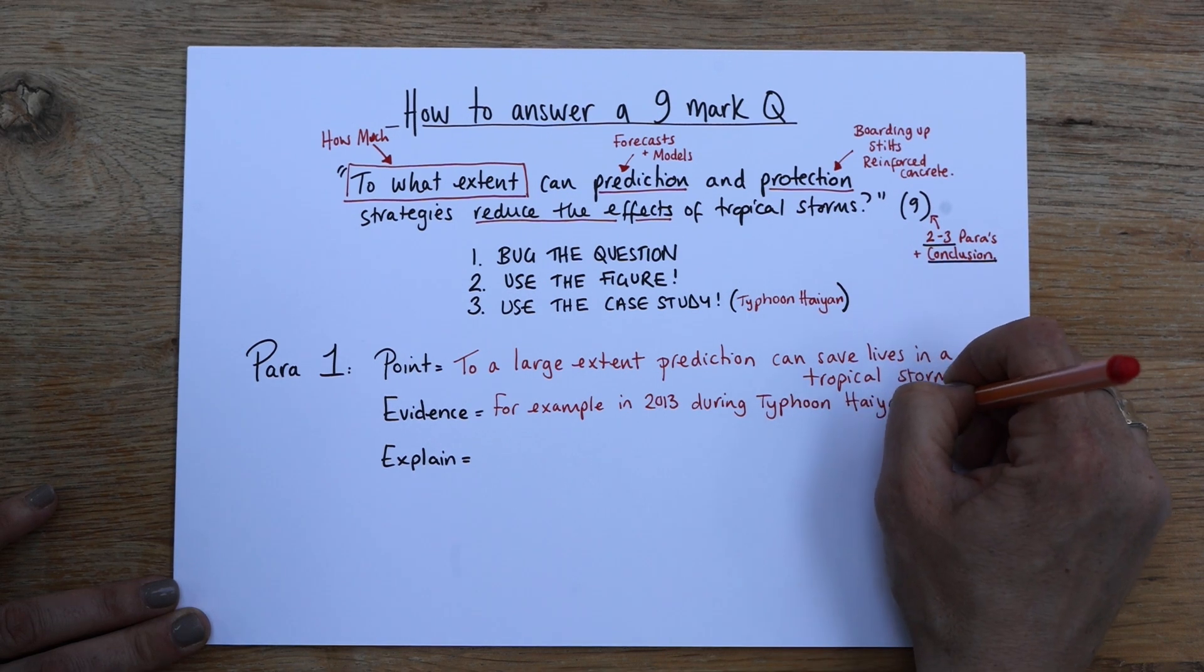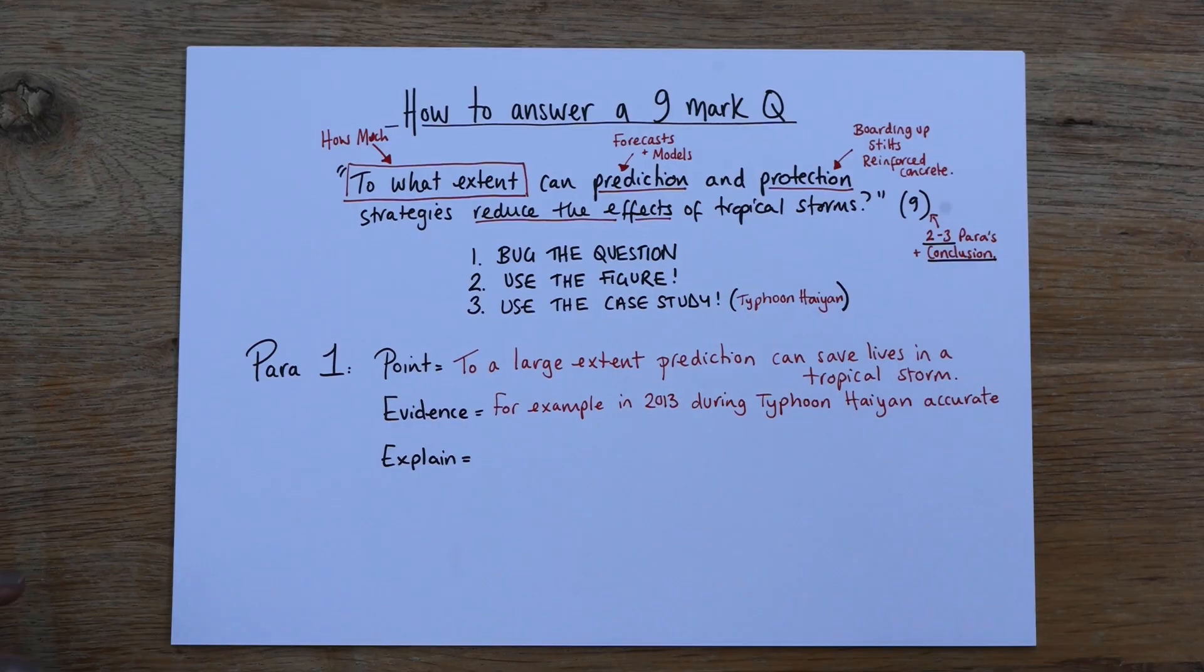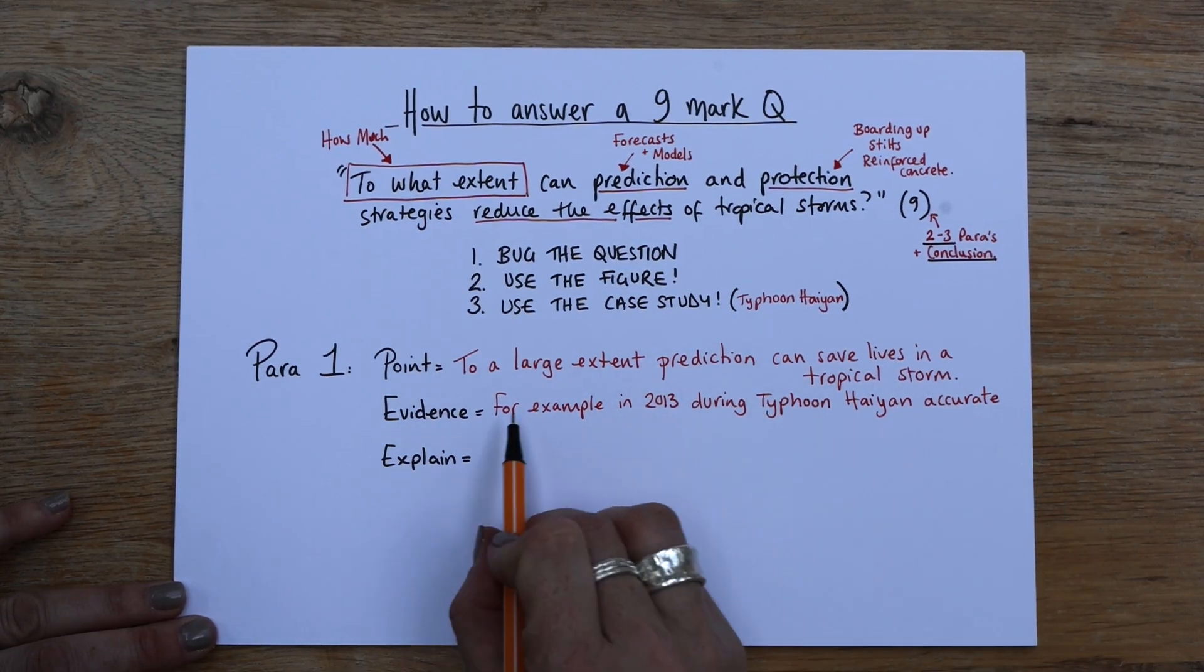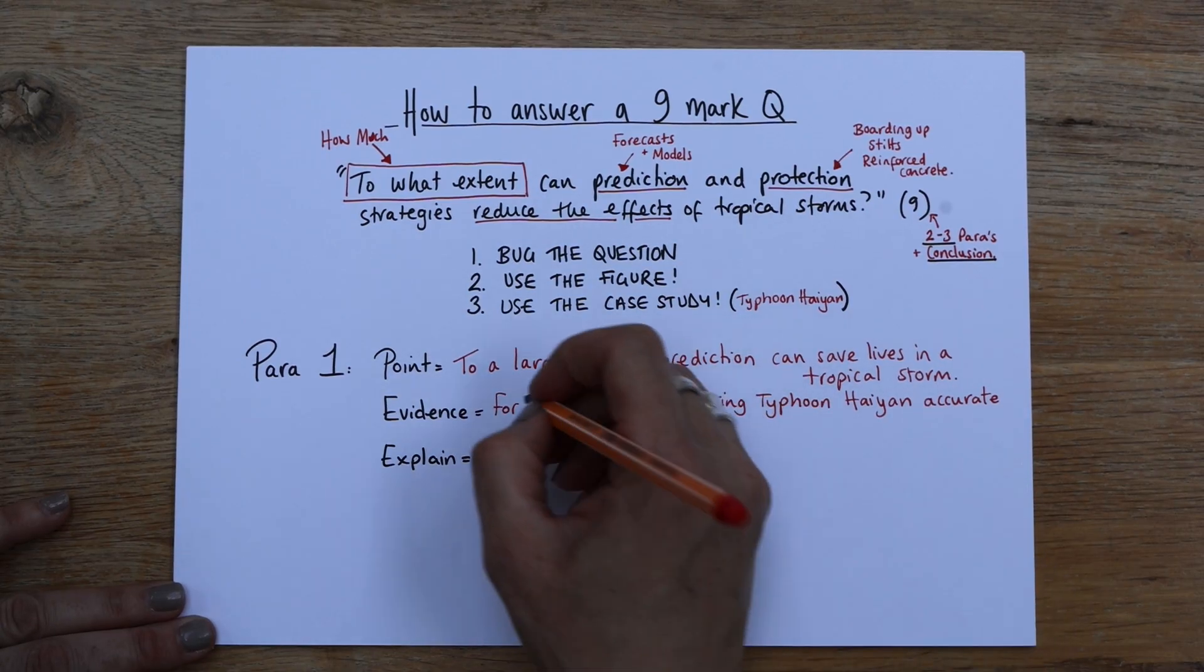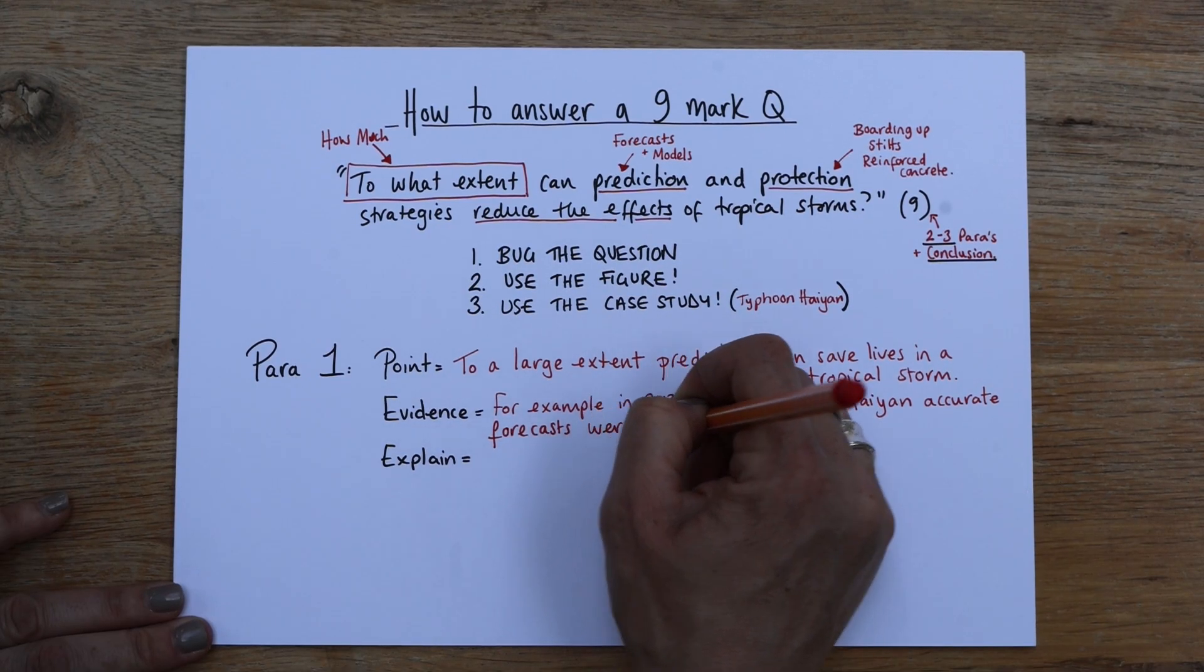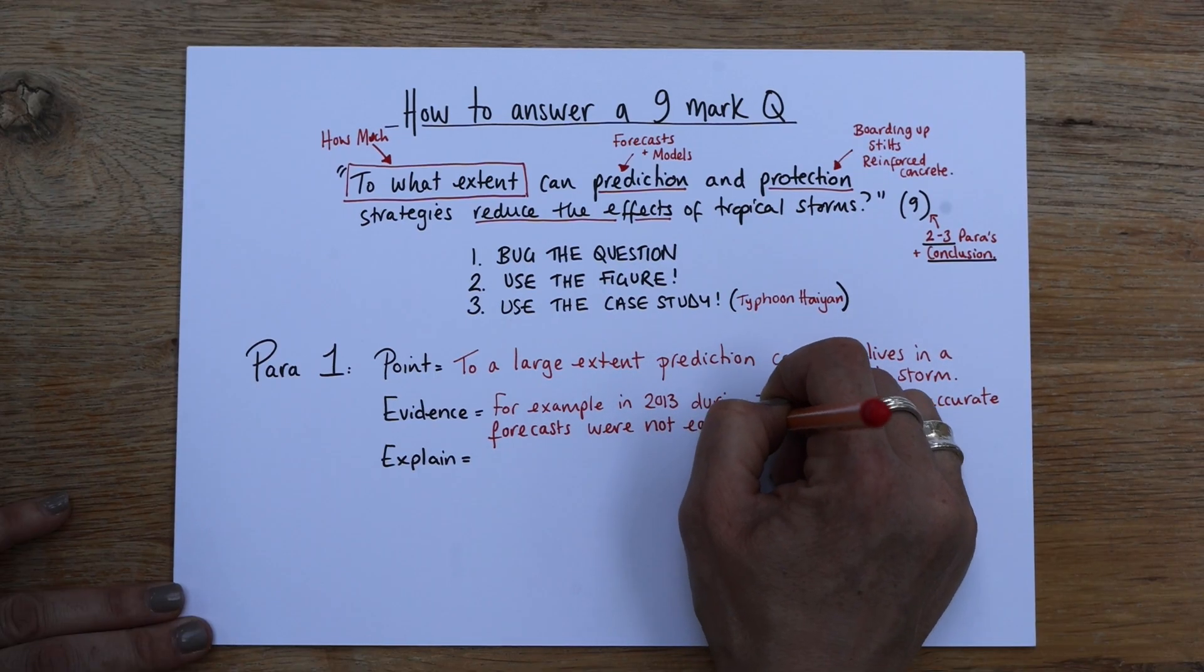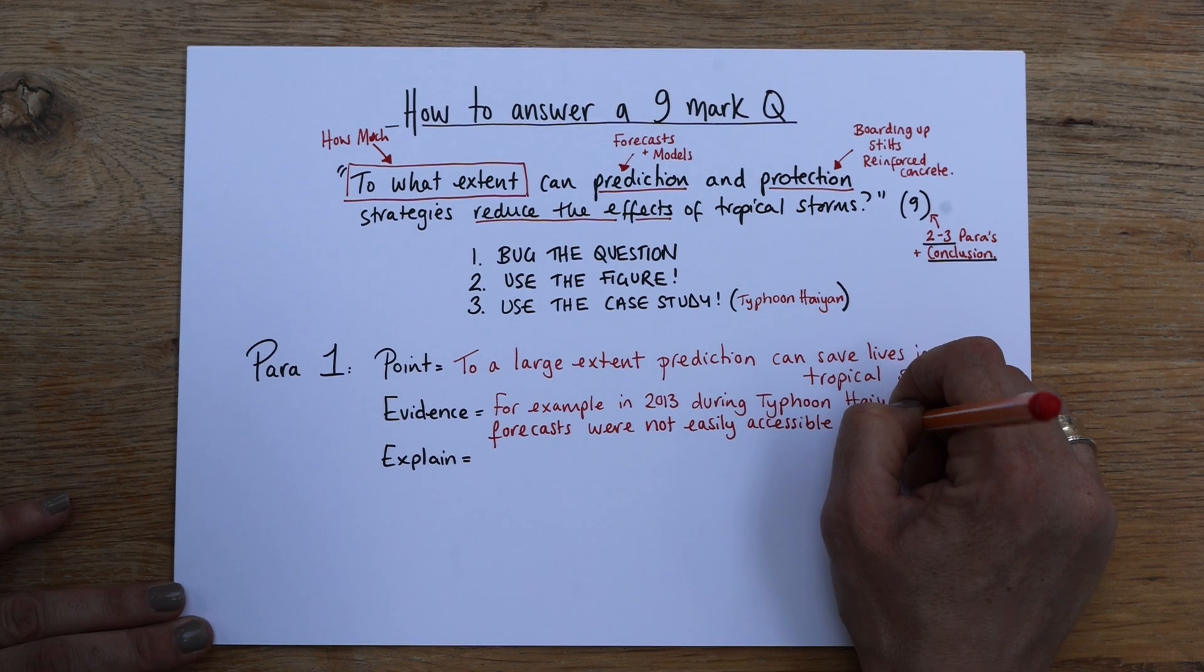What happened was there were accurate forecasts, but they just weren't easily communicated to everybody. So people weren't aware. So then they couldn't evacuate. So we're going to say, for example, in 2013, during Typhoon Haiyan, accurate forecasts were not easily accessible to all residents.